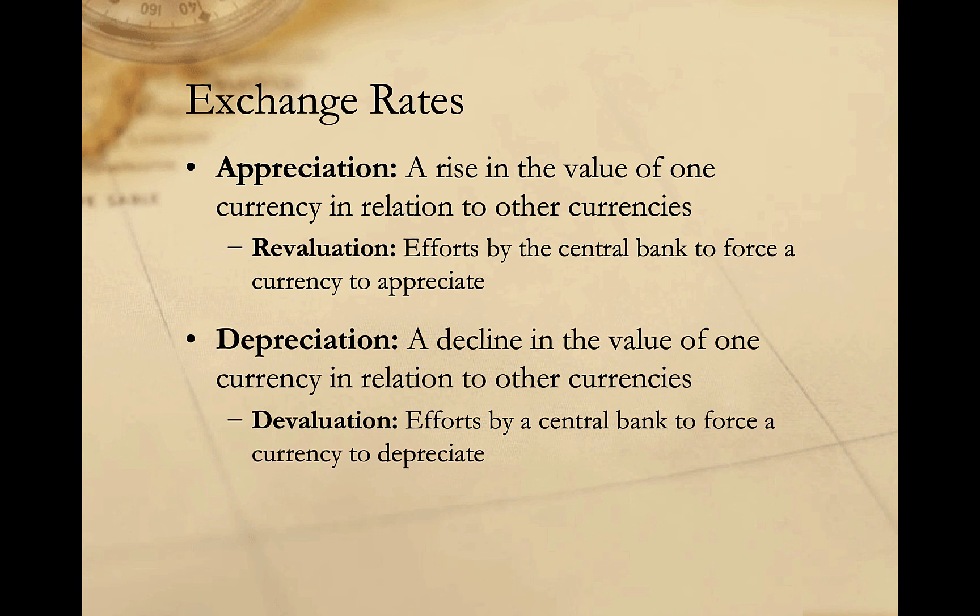Around the world, some five trillion dollars per day is exchanged on global currency markets, the vast majority of which is financial speculation — individual or institutional investors betting on small changes in currency values. By way of comparison, the total world GDP is about 127 trillion dollars per year, meaning one month's currency exchanges exceeds the total of the world's annual production.